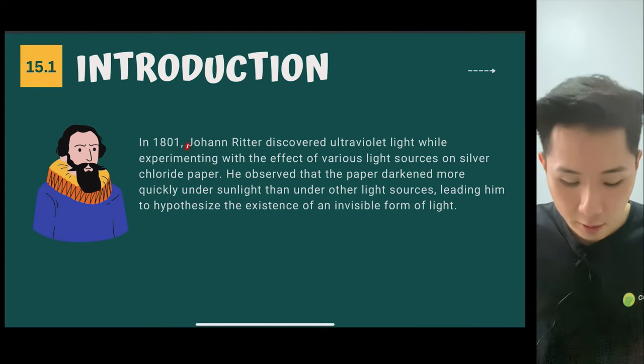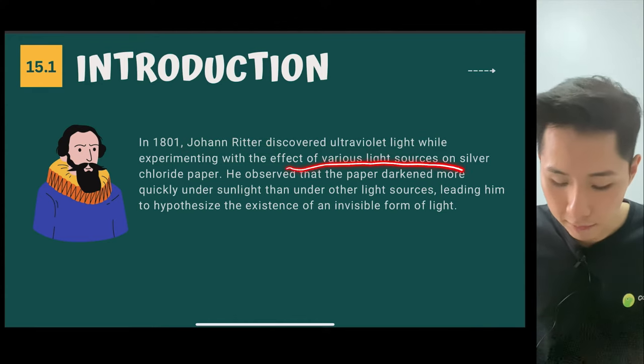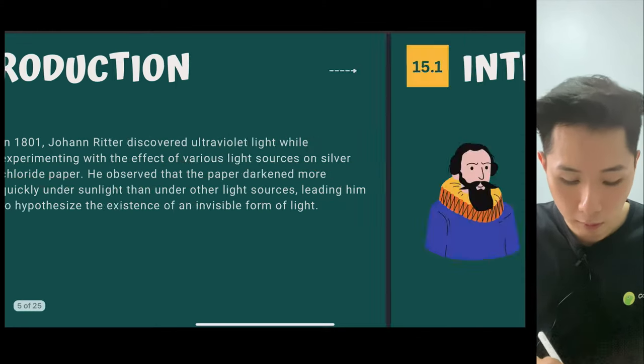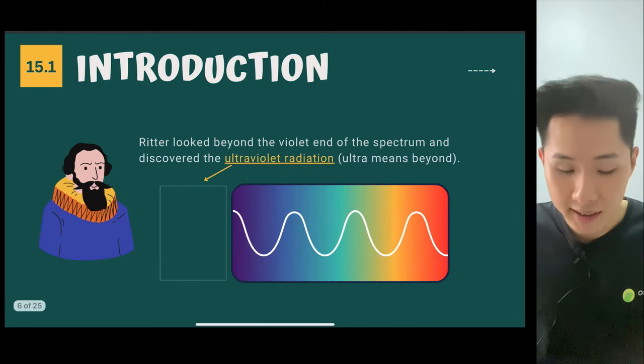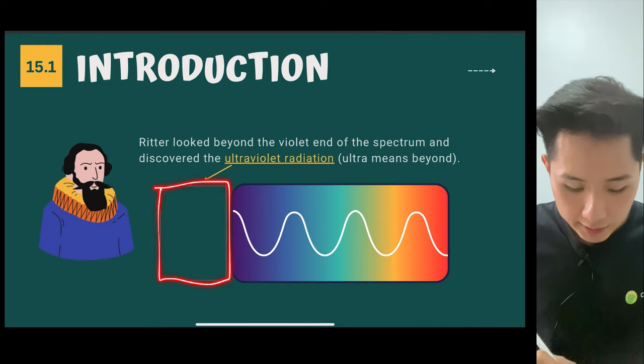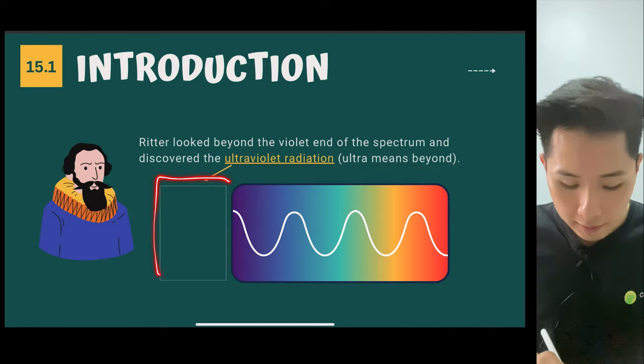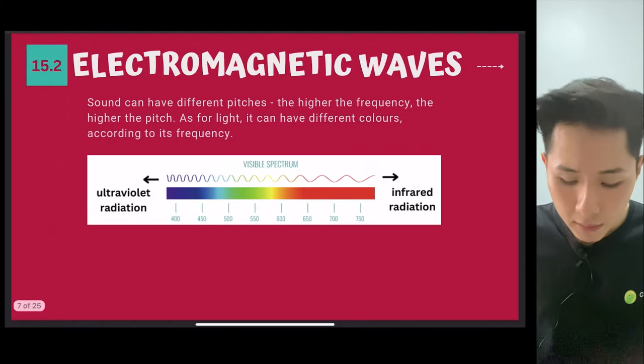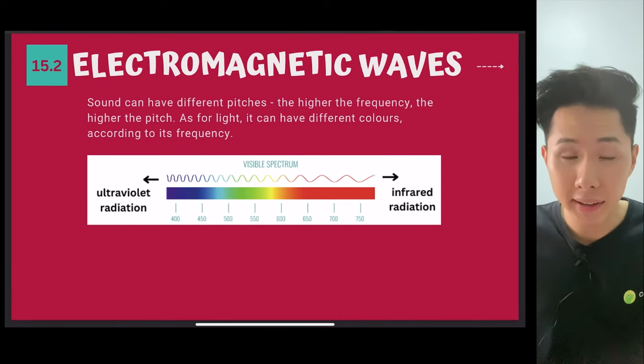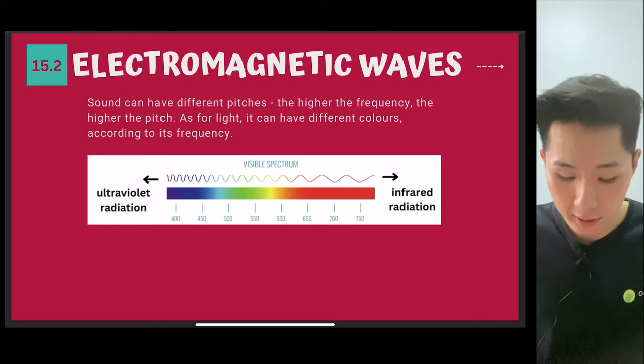Whereas the other scientist, Johan Ritter, he discovered ultraviolet light when experimenting with the effects of light source on silver chloride paper. So what he discovered eventually is known as the ultraviolet light. Ultra means beyond, meaning there's another invisible light beyond this violet color. And that's what all the scientists discovered, the infrared and ultraviolet.